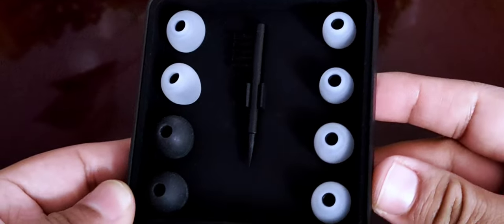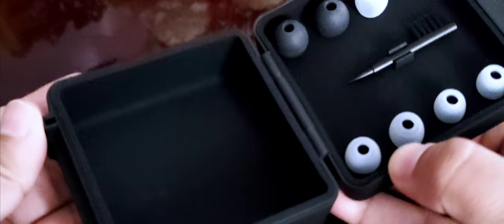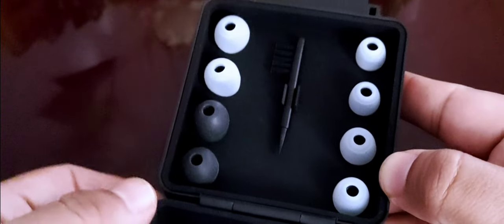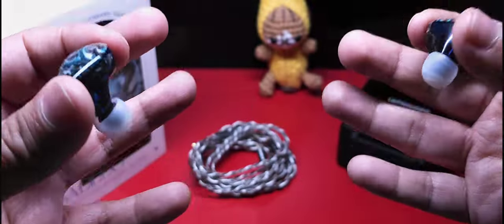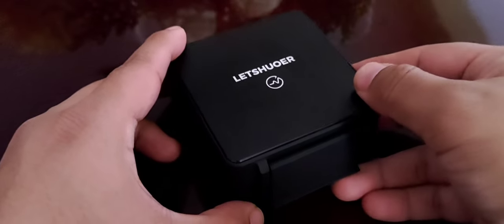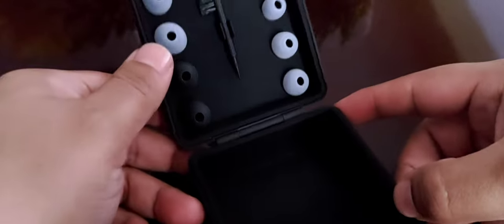Debajo de eso nos encontramos con los auriculares y el case. A este accesorio le doy mucho mérito. Es una excelente representación de un diseño funcional porque, además de resistente y de tener el espacio suficiente en su interior, cuenta con un organizador de eartips y también con la herramienta de limpieza. Así, no tendrás que preocuparte por tener todos sus accesorios en desorden.